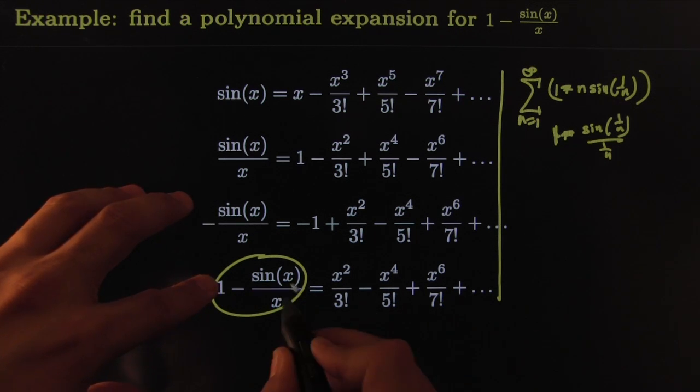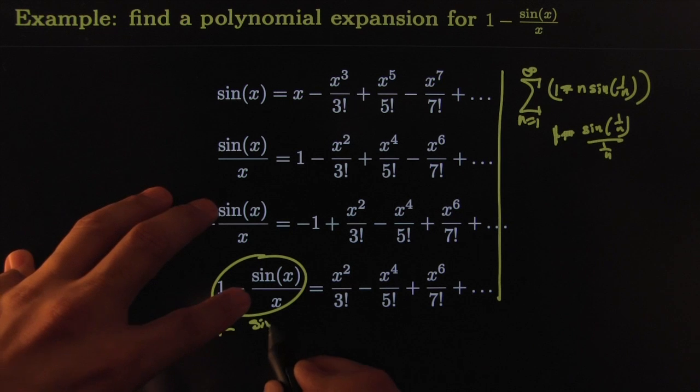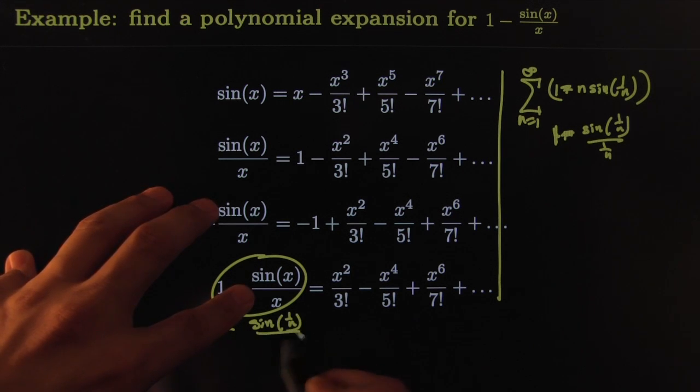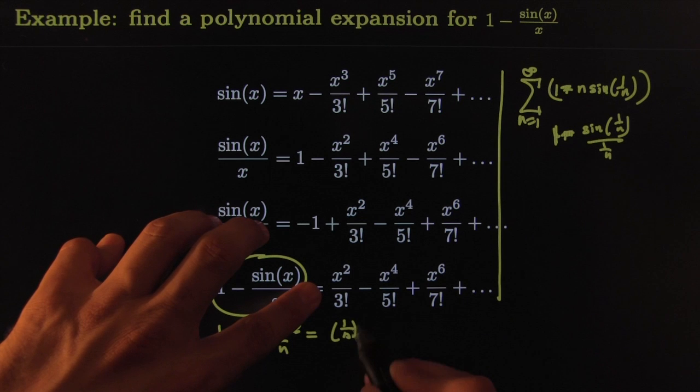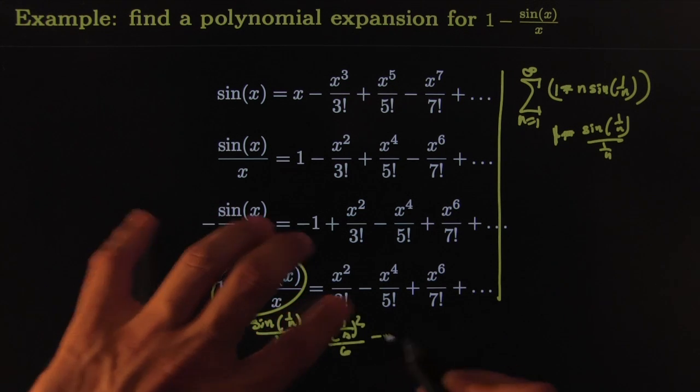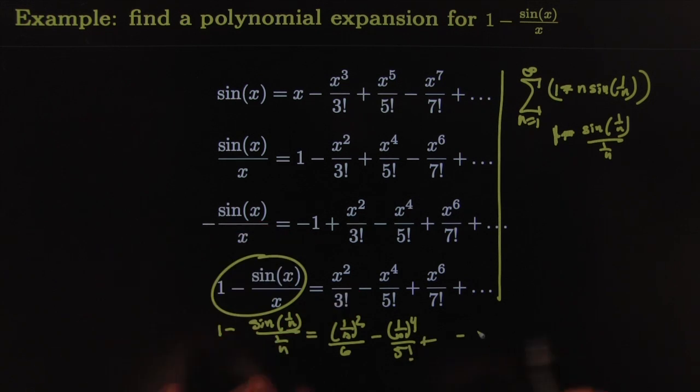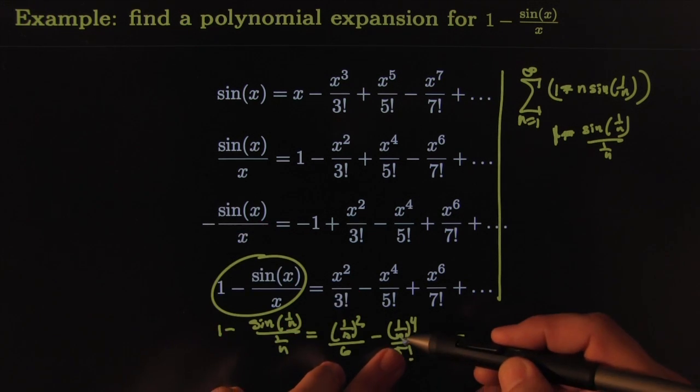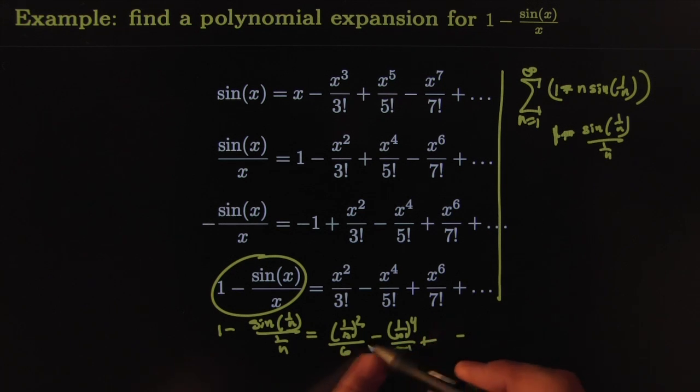So we could substitute 1/n for this, and we would get that (1 - sin(1/n))/(1/n) equals 1/n² divided by 6—that's 3 factorial—minus 1/n⁴ divided by 5 factorial, and so on. These terms have n on the bottom, so they become really, really small, incredibly small, meaning that this is a dominating term.